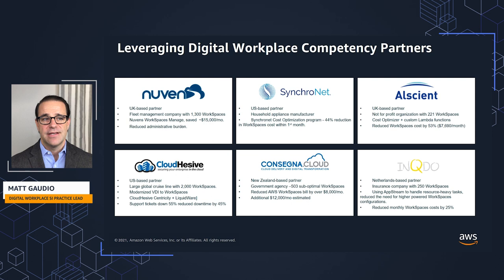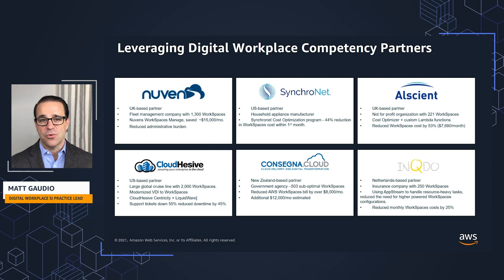Consegna helped a government agency identify about 500 workspaces that were not in optimal running mode or were using the wrong bundle for their use case. They converted the workspaces to the appropriate mode and bundle, reducing the workspaces bill by about $8,000 in the first month, with potential to increase that savings to about $12,000 based on additional findings.